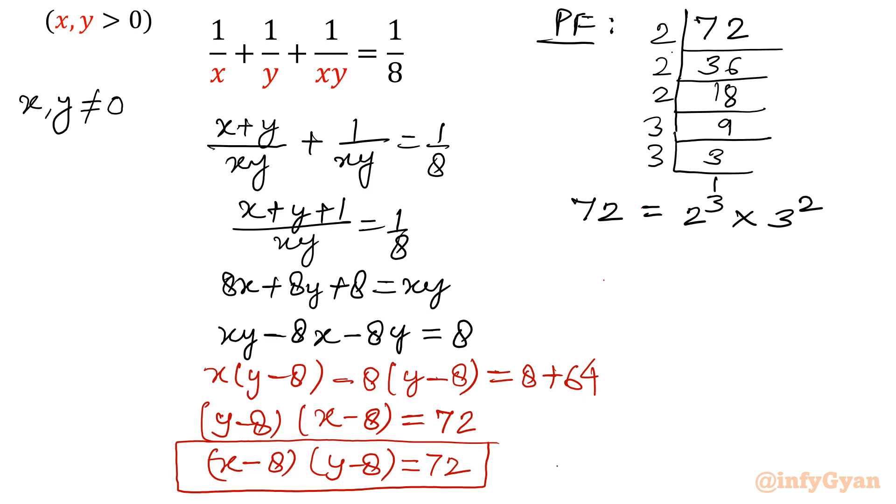So total number of factors, that formula we have seen in so many videos. So total number of factors would be this power plus 1 times this power plus 1. So (3+1) times (2+1). So it is 4 times 3, 12 factors are there. Maximum 12 factors we will have.